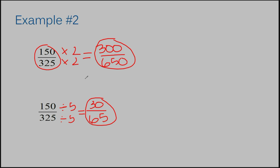I do need to clarify something. When you're doing something to the top and bottom of your fraction to find an equivalent fraction, I did say you could do anything you want as long as they are the same — but that's actually not fully true. You can only multiply or divide. You cannot add or subtract and still get an equivalent fraction. So as long as you're multiplying or dividing by a number, your answer will be equivalent. Let's move on to example number three.